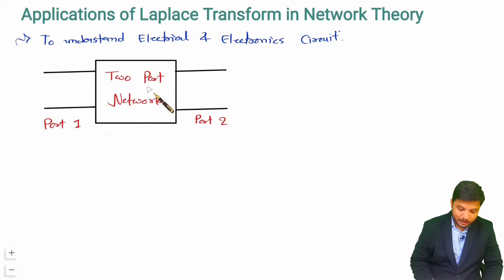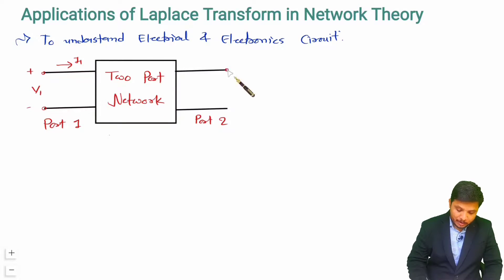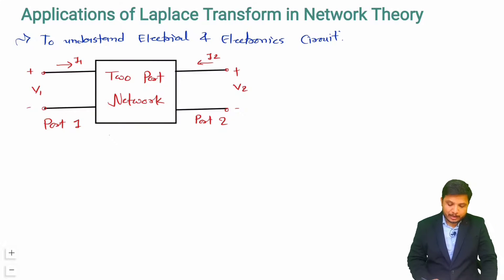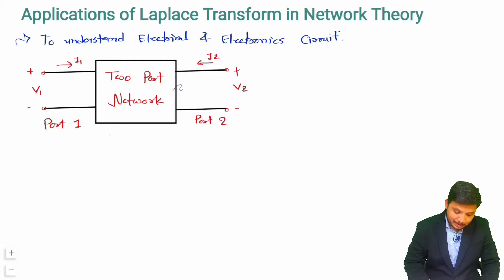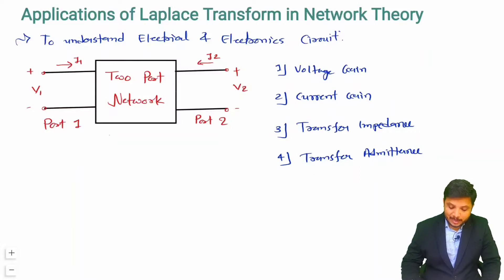Here we have a two-port network in which this is port 1 and this is port 2. At port 1 we have voltage V1 and the resulting current I1 going inside this two-port network. At port 2 we have voltage V2 and current I2 entering this two-port network. Parameters like voltage gain, current gain, transfer impedance, and transfer admittance can be obtained using Laplace transform.